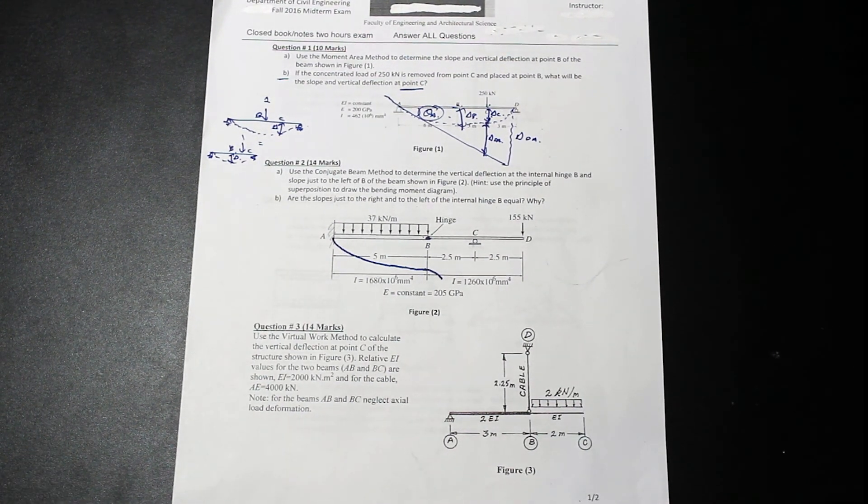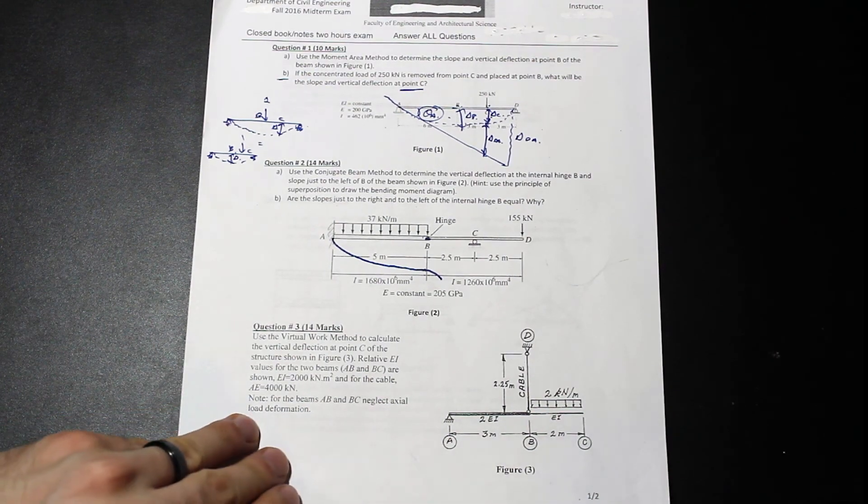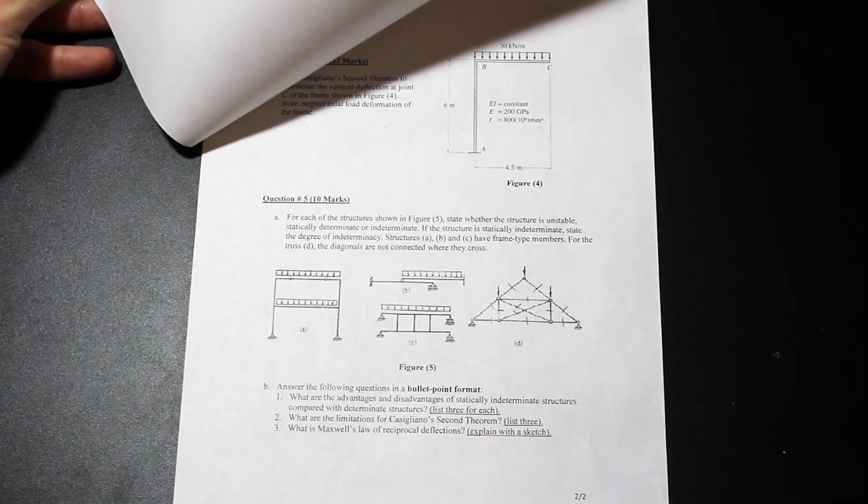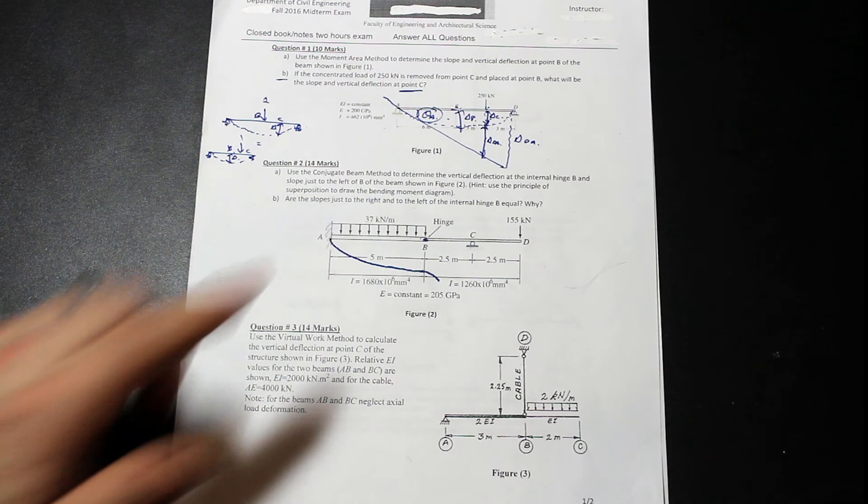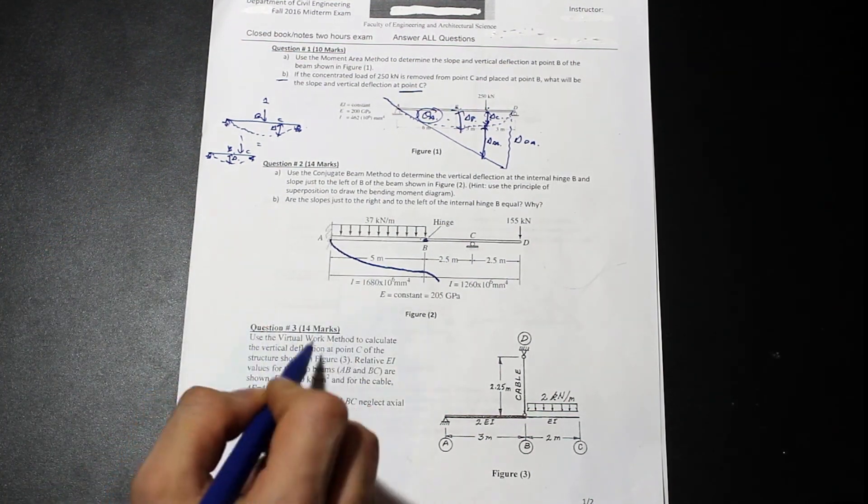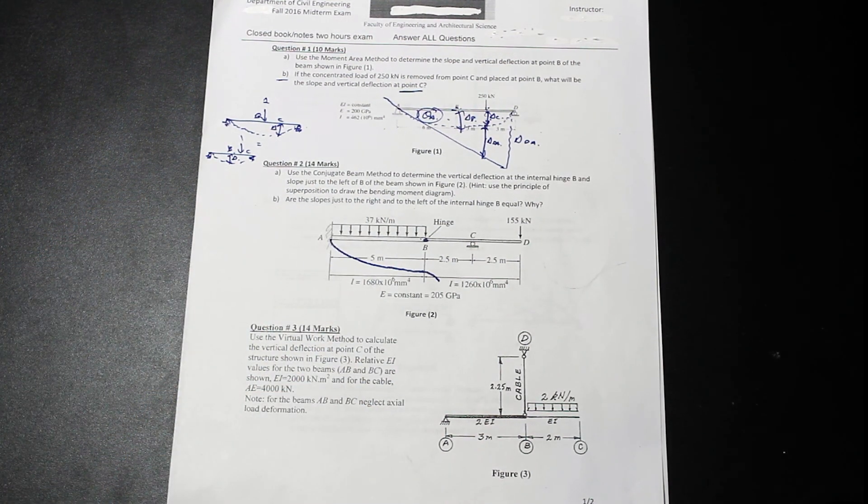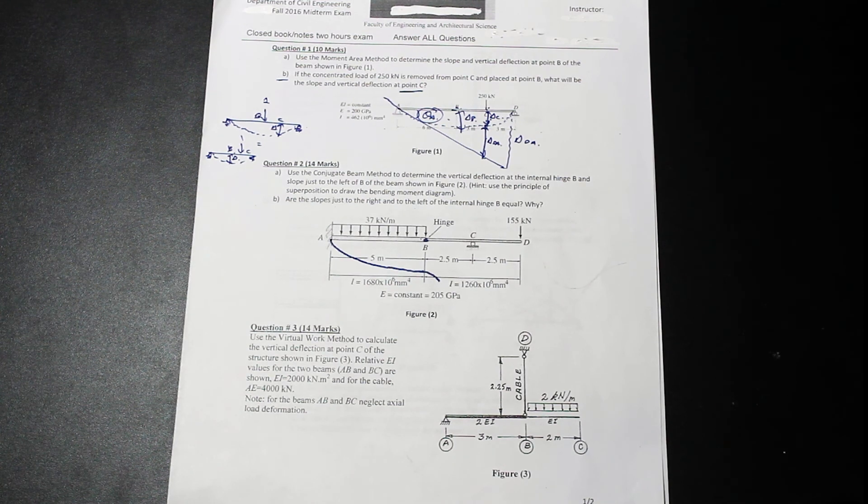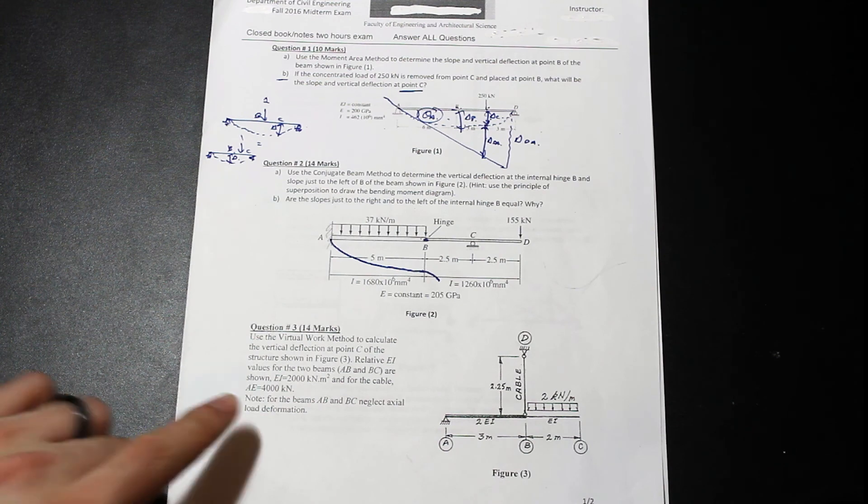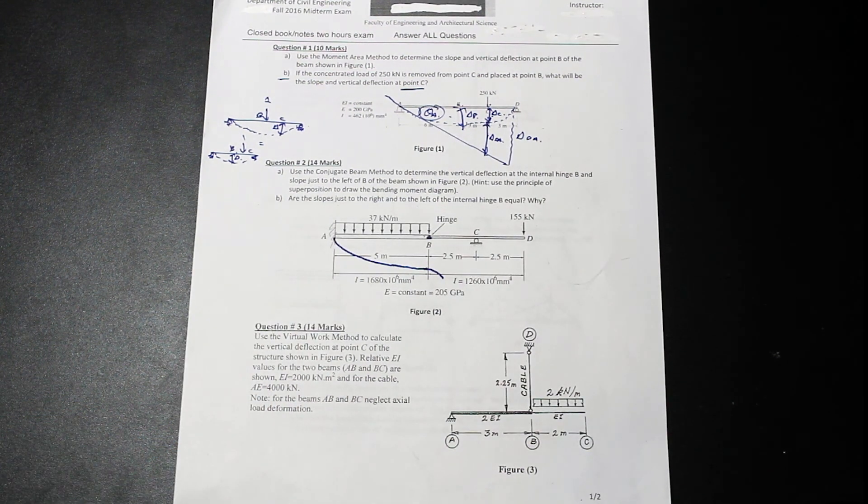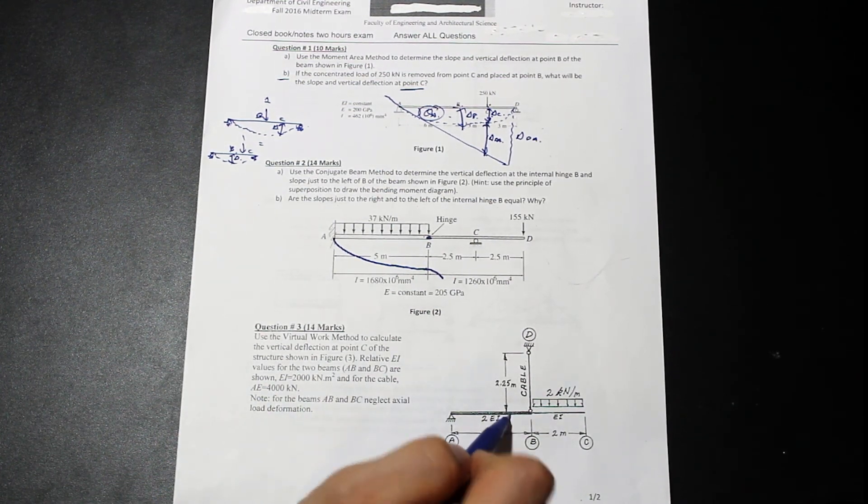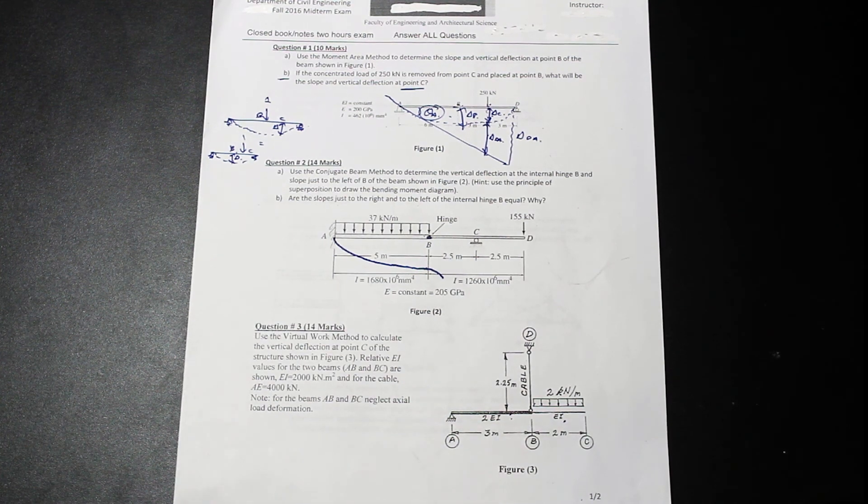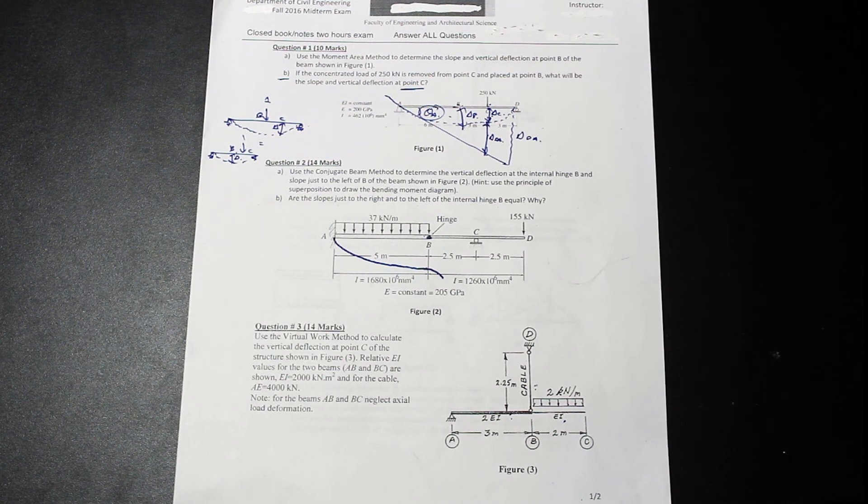Let's look at question three. So question three asks us to, and as you can see, I mean, it was two hours and there's one, two, three, and then there's going to be four or five questions and then a short answer section. So it wasn't that hard of an exam, but you did need to kind of go fast. And this one took a little bit of time. In this one, we're asked to use the virtual work method to calculate the vertical deflection at point C of the structure relative. EI values for the two beams are shown and for the cable AE. So this is a big hint. I know a lot of people had problems with this and for the beams neglect axial load deformation. So what we have here is we have a beam, we have a beam, they're non-prismatic. So one has a bigger section size or more stiffness than the other. And we have a cable.